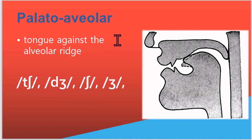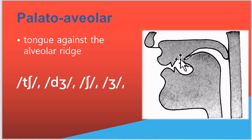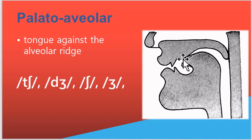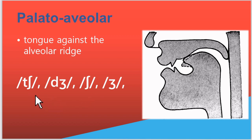And we have palato-alveolar sounds in English, where the tongue presses or is very near both the alveolar ridge and the palate. It is not only the alveolar ridge but also the hard palate that is involved. The sounds are ch, j, sh, and the zh sound.